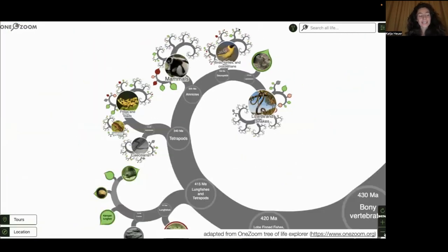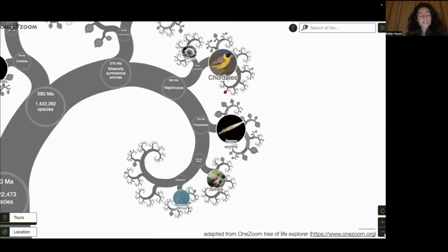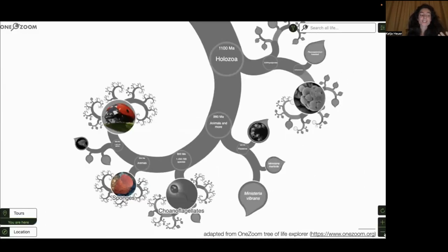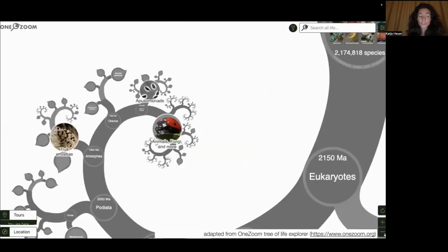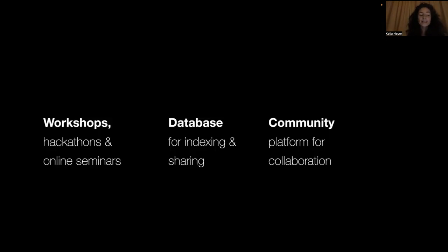We would like to facilitate finding and sharing data and resources, tools and expertise, and make it easier to work together. One part will be to bring us together in workshops, hackathons, and online seminars. A second part will be to create a database for indexing and sharing comparative multi-scale brain data, as well as interfacing it with other relevant data such as ecological, physiological, sensory, and behavioral data. And the third aspect will be to create a web-based platform for indexing projects open to collaboration, to accelerate our understanding of brain evolution processes.